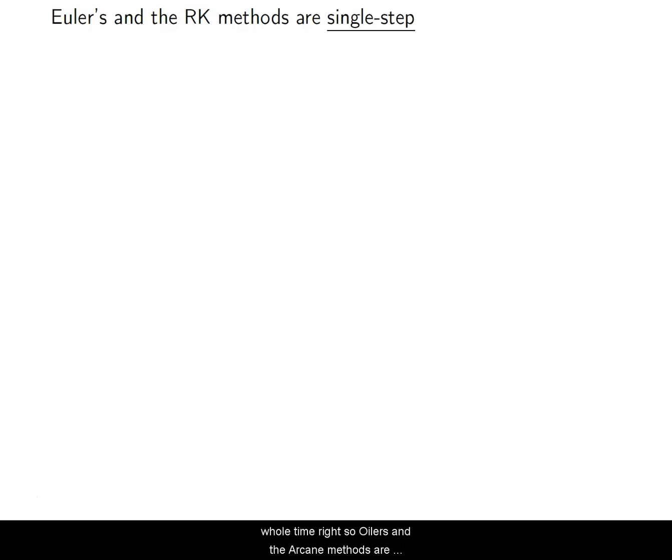So Euler's and the RK methods are single-step, or starting methods. Which makes sense because we saw before that Euler's and improved Euler's are both just RK methods, basically. So the way we define a single-step method is that our next point is based off of our current point.